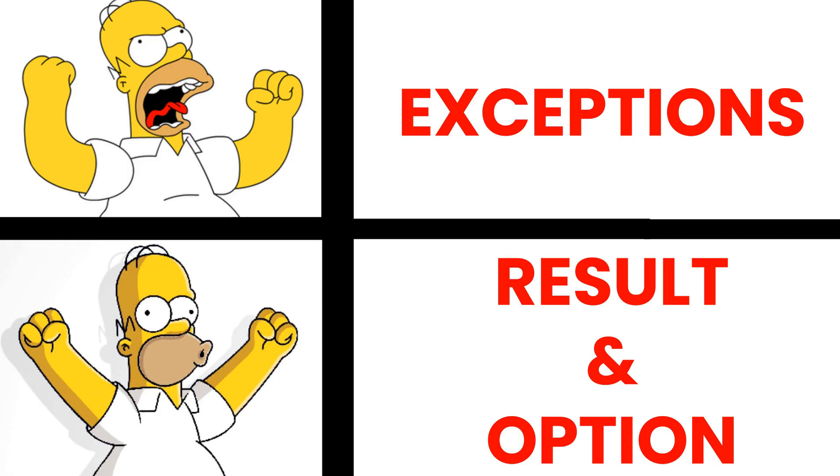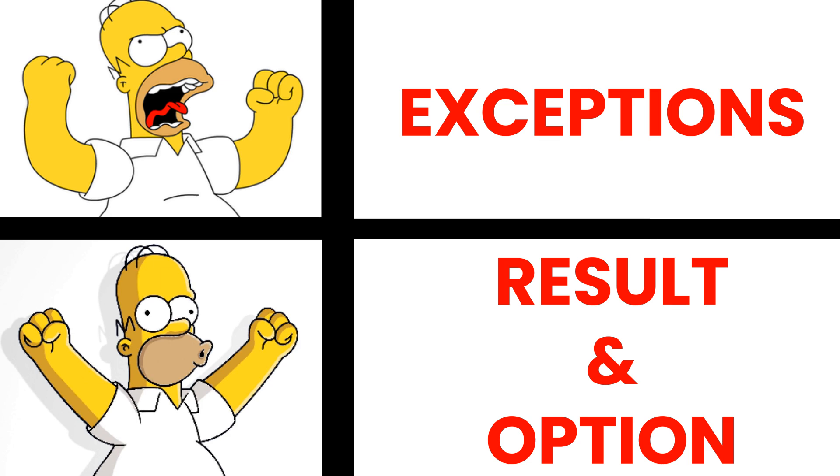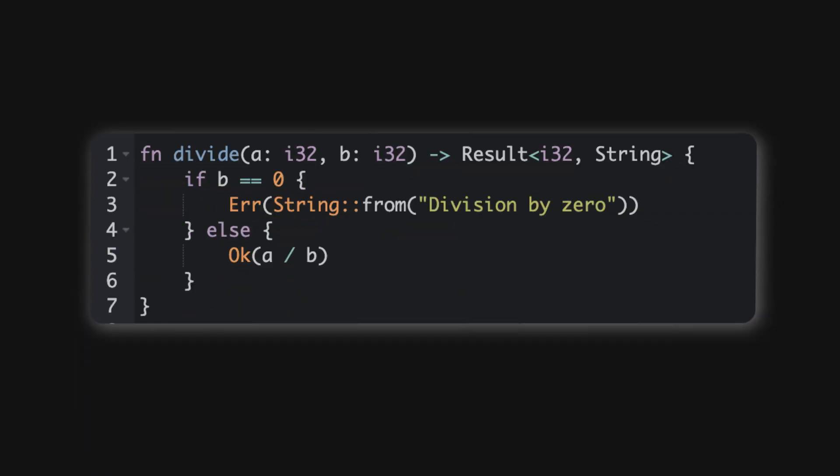Finally, error handling. Rust doesn't have exceptions - it uses Result and Option types. At first this might seem a bit clunky, but it forces you to handle errors properly. Here's an example function that divides two numbers but returns an error if you try to divide by zero. Instead of crashing, Rust makes sure you handle both success and failure cases, which makes your code more resilient.